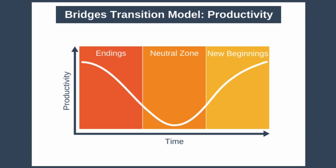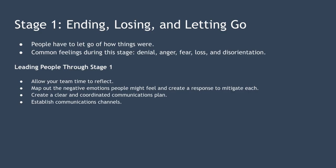Let's dig a little deeper into each of the three stages. Firstly, ending, losing and letting go. People have to let go of how things were and also how they were. Some things they might need to leave behind include relationships, team members and processes. This stage often percolates feelings of resistance and emotional upheaval as employees are forced to give up something they are familiar and comfortable with.